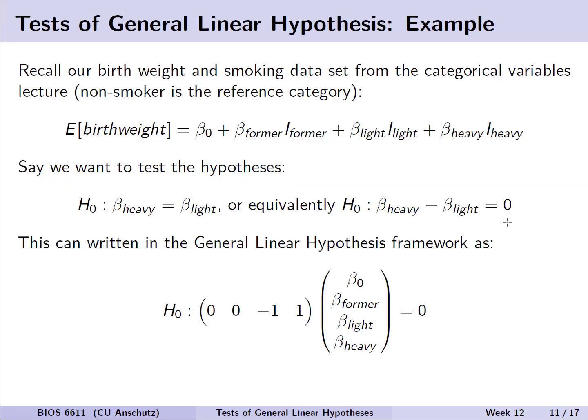Let's walk through an example. Let's return to our birth weight and smoking data set from the categorical variables lecture, where non-smoker is our reference category. We have the expectation of birth weight equal to our intercept representing the non-smoker birth weight and then the deviation with respect to birth weight for former smoker, light smoker, and heavy smokers. Let's say we wish to test the hypothesis that heavy and light smokers have the same birth weight. We might say that beta heavy equals beta light or equivalently that their difference is equal to zero. We can write this in our general linear hypothesis framework as zero, zero, negative one, and one for the matrix of those contrast coefficients and set it equal to zero.